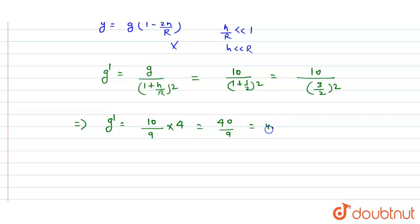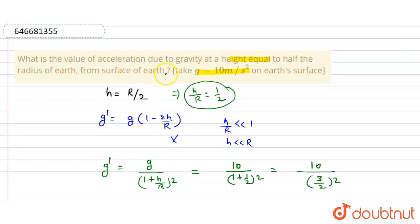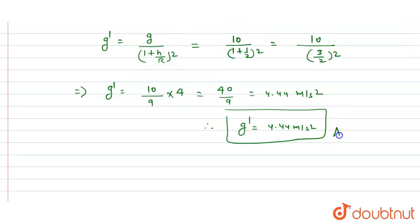Therefore the acceleration due to gravity g dash is equal to 4.44 meters per second squared. This is the required value. In this question we have to find the acceleration due to gravity at a height equal to half the radius of earth from earth's surface. So this is the final answer. I hope you understood, thank you.